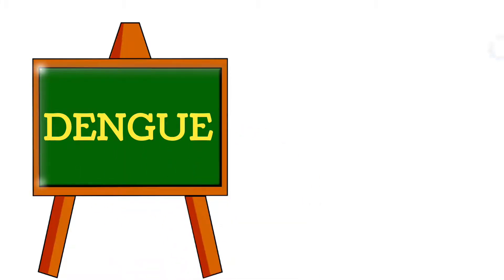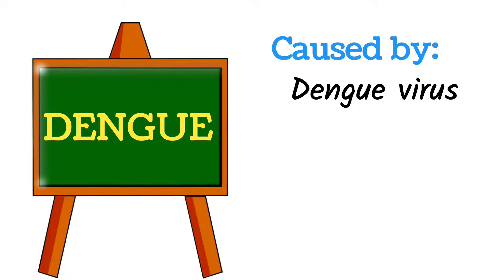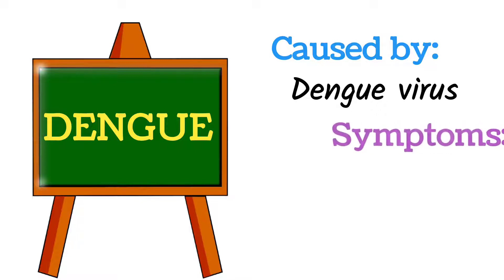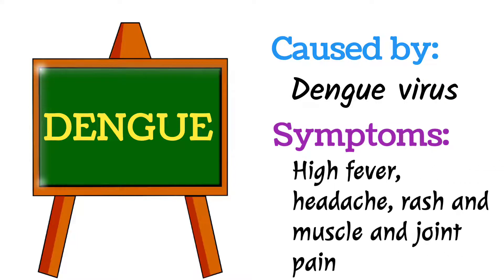Next is Dengue. Dengue is caused by the Dengue virus, which is usually transmitted through mosquitoes. When a mosquito carrying the Dengue virus bites a human, the virus is transferred from the mosquito into the blood of the human, causing the disease known as Dengue. The symptoms include high fever, headache, rashes on the body, vomiting, and muscle and joint pain.